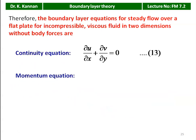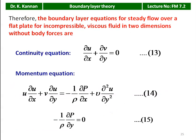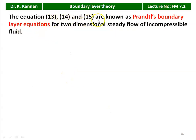The y-momentum equation is simplified by neglecting terms of lower magnitude, giving −(1/ρ)·∂p/∂y = 0. The complete set of equations for two-dimensional incompressible viscous fluid flow without body forces — equations 13, 14, and 15 — are known as Prandtl's boundary layer equations for two-dimensional steady flow. Using these equations, we will derive the Von Karman equation.